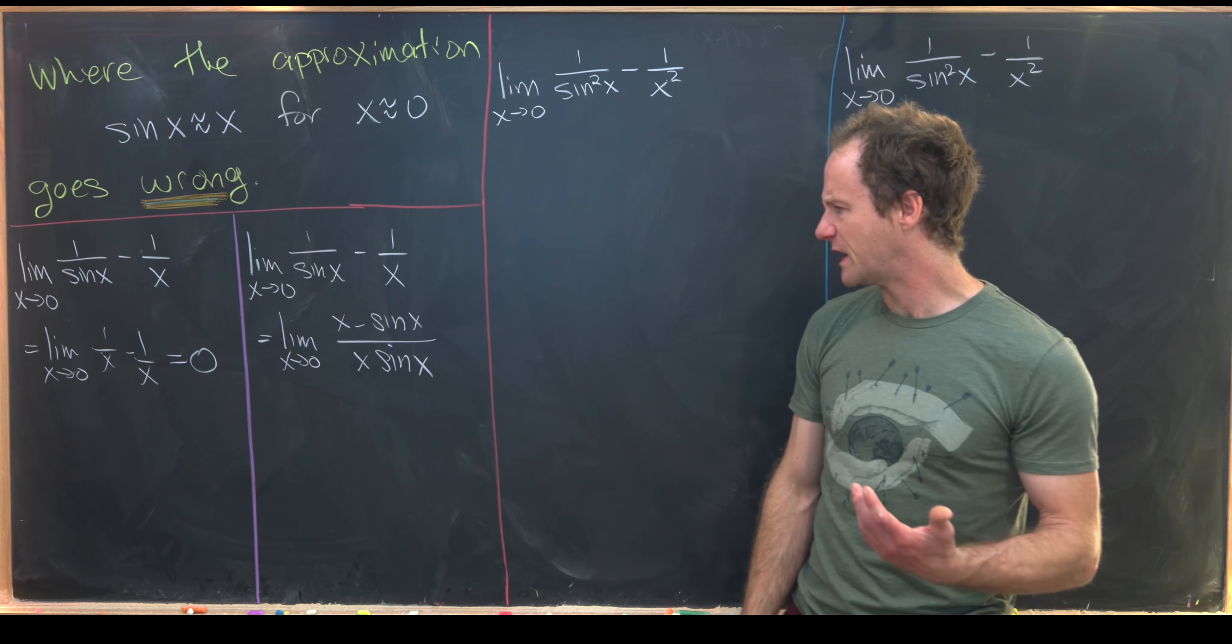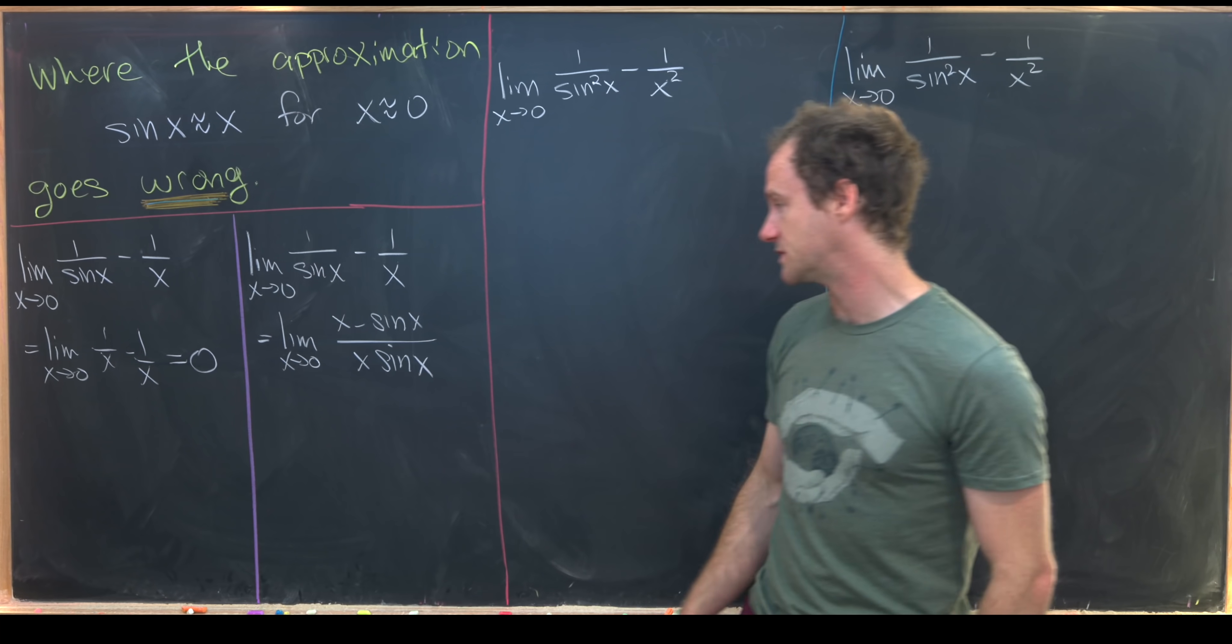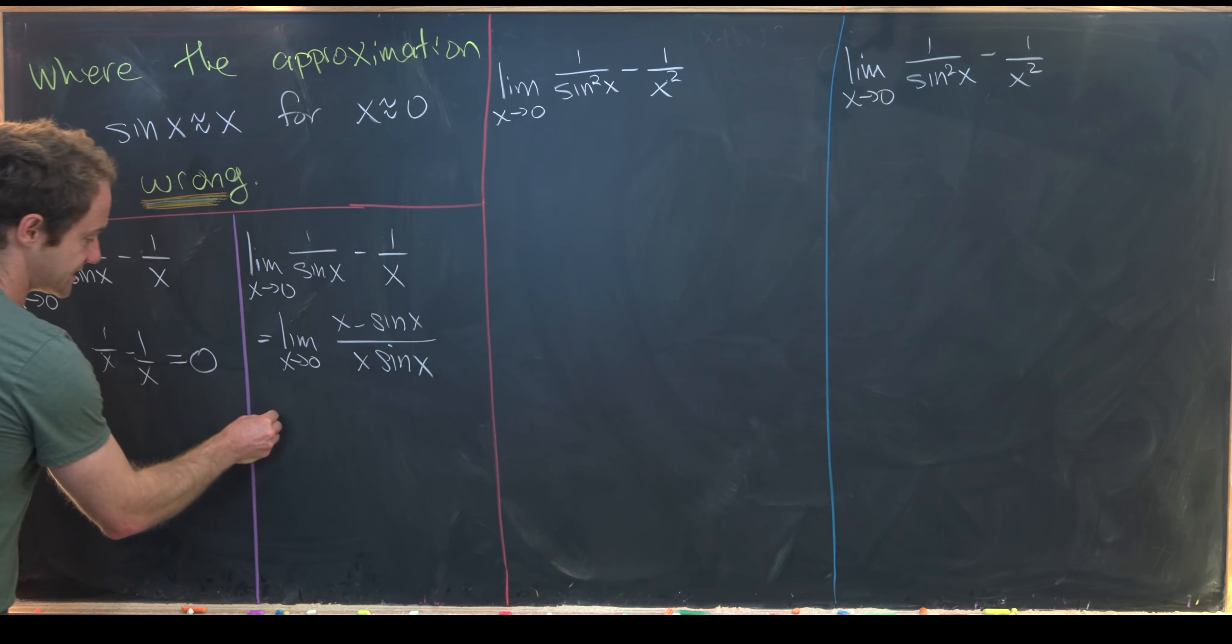Okay, and then from here, we notice that we have an indeterminate form of type zero over zero. We can probably use L'Hopital's rule. So let's do that.